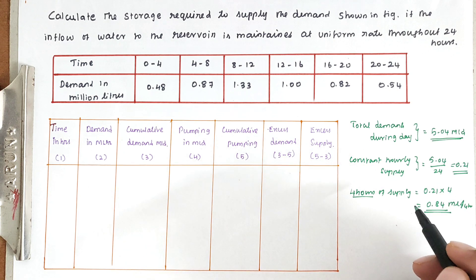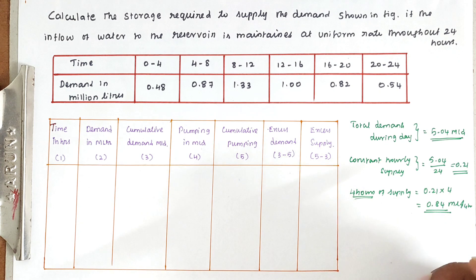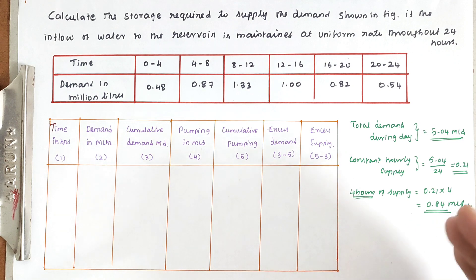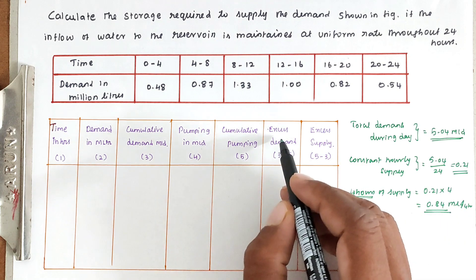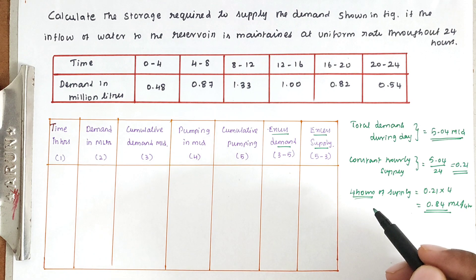The constraint is that at some times the requirement will be more — for example during morning peak time we need extra water — while in the afternoon the peak demand will be lower. So we need to find how much water is in excess supply and how much is excess demand, in order to determine the required storage tank capacity for the town. We use an analytical solution to find the total storage required.